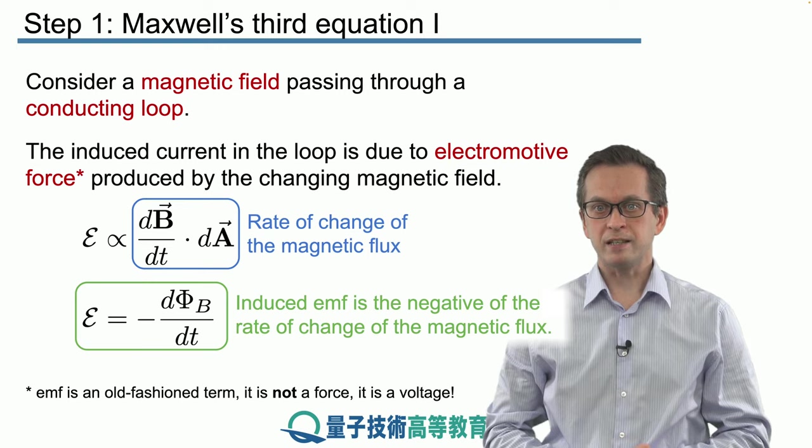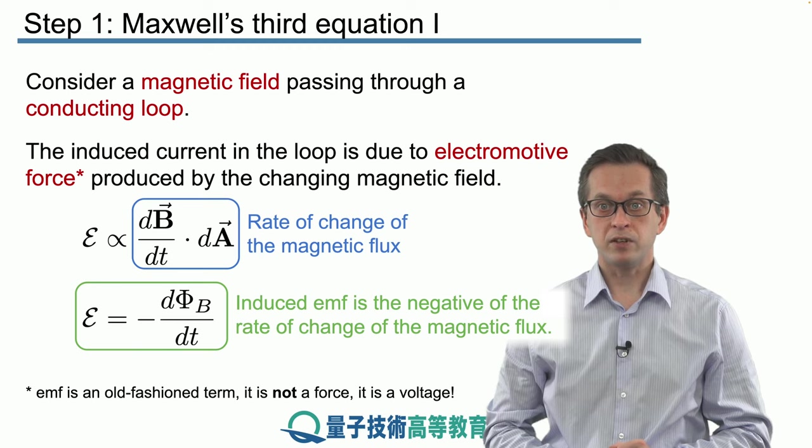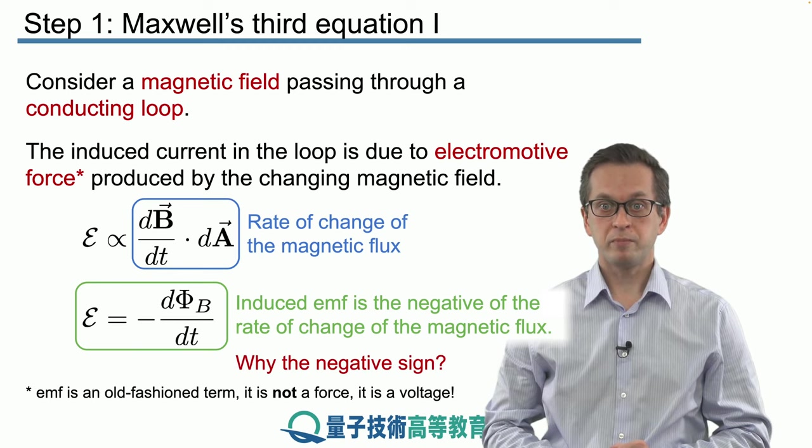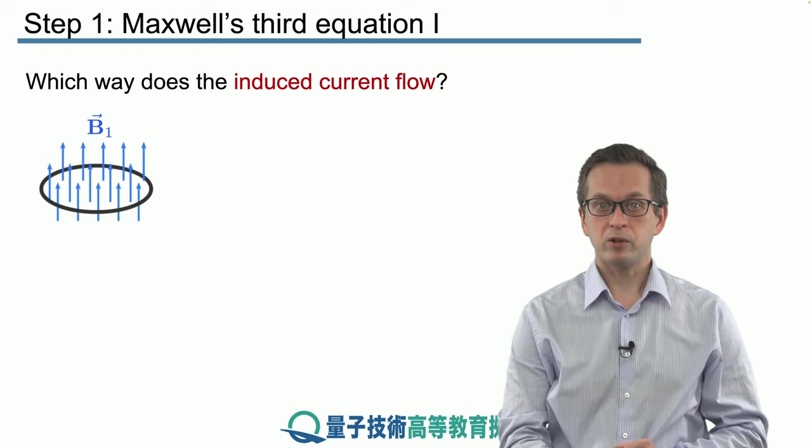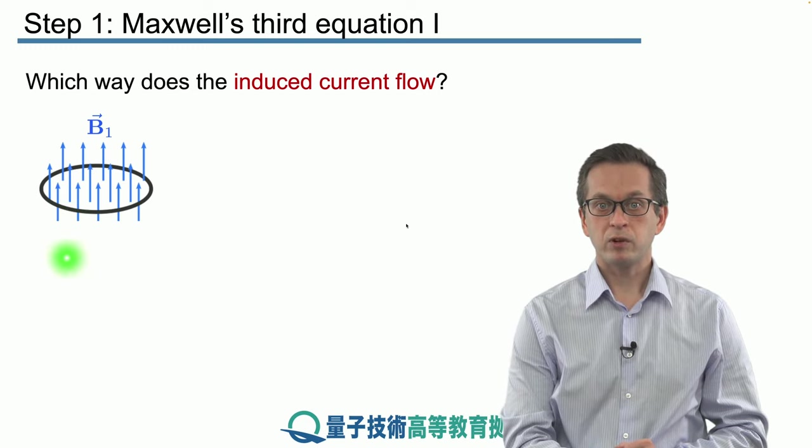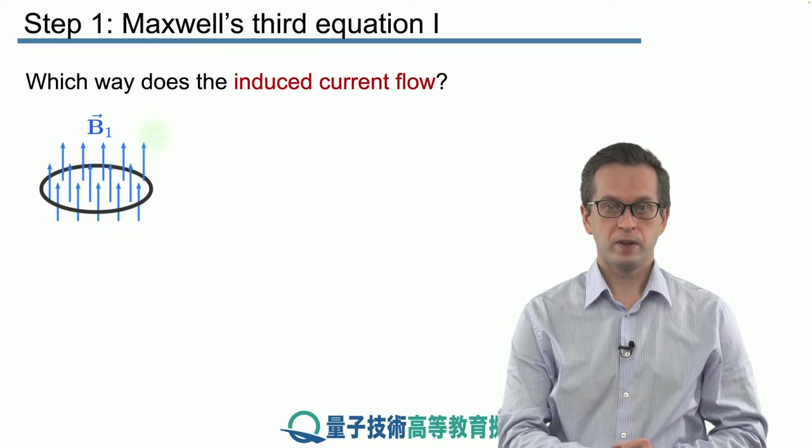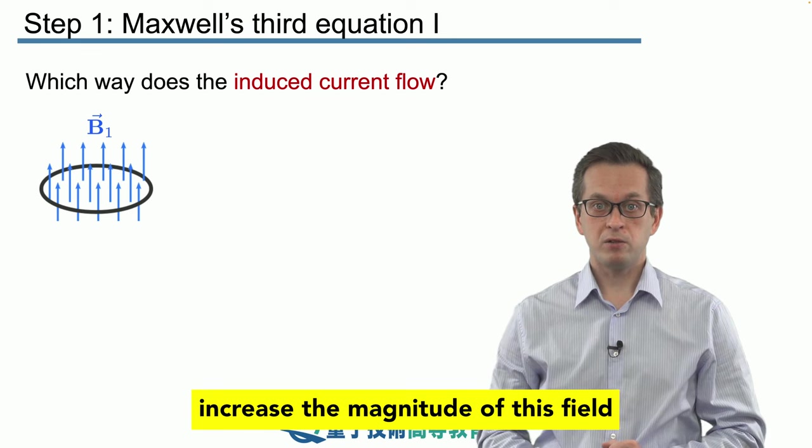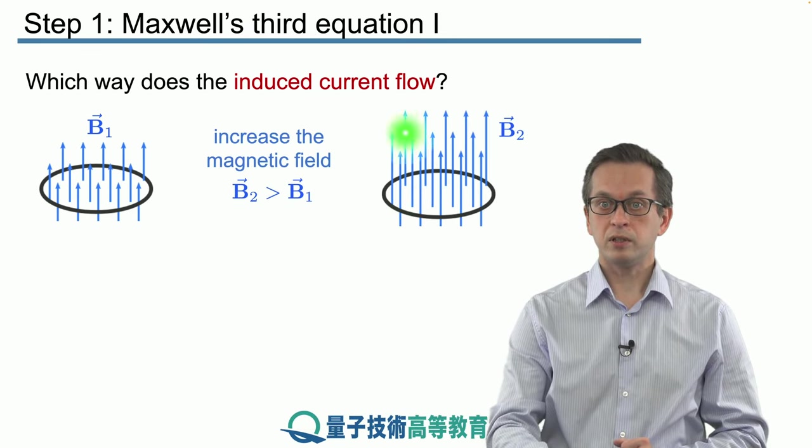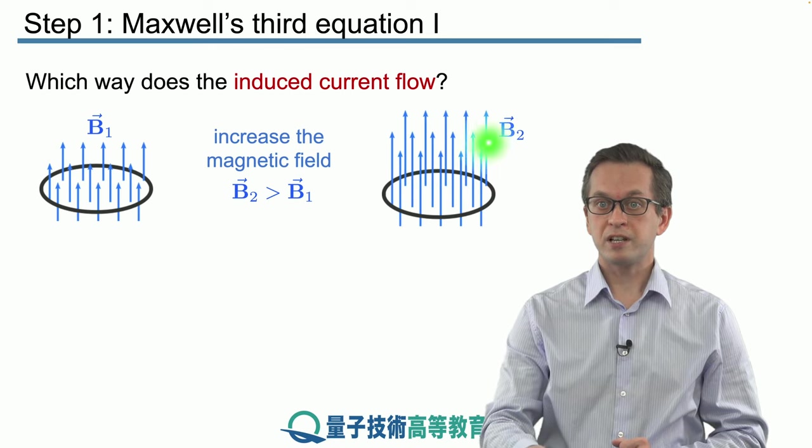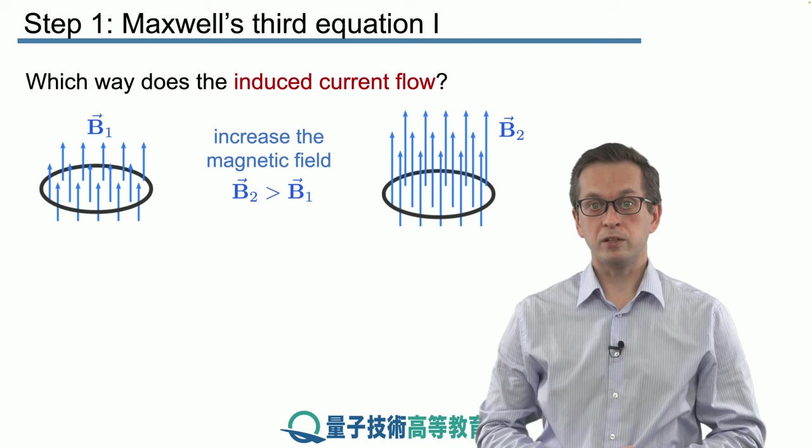The reason is that the induced EMF is negative in order to oppose the change that the magnetic field is causing. For example, we have the following scenario: we've got our loop and we've got some magnetic field B₁ passing through the loop. Now what we do is we increase the magnitude of this field, so we crank up the strength of the magnetic field until it reaches some value B₂, which is larger than the original magnitude B₁.